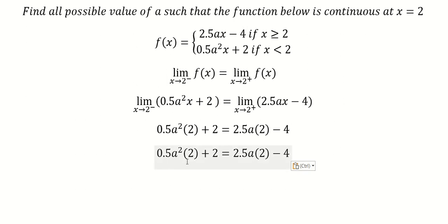So 0.5 multiplied by 2, we have 1. This one with 2, we have 5. So we put 5a and negative 4 go to the left.